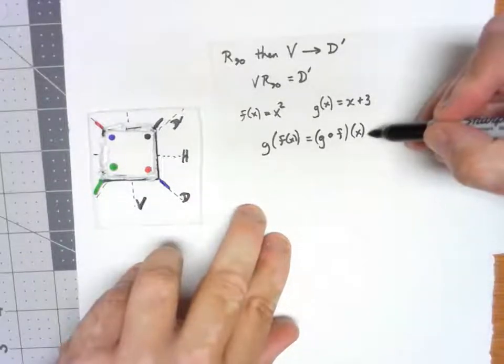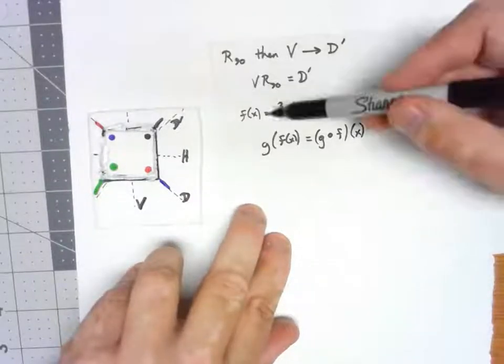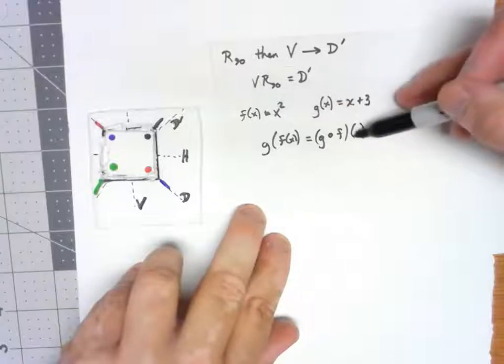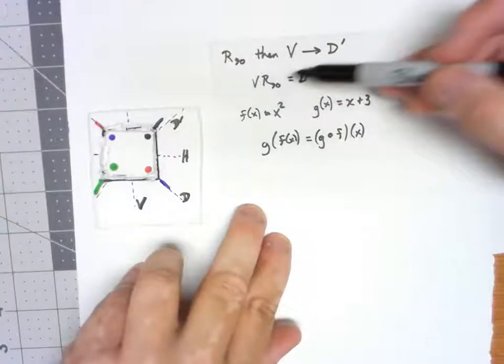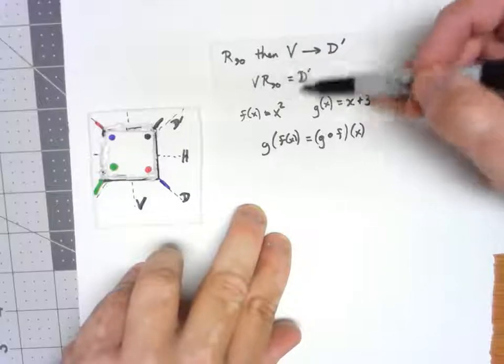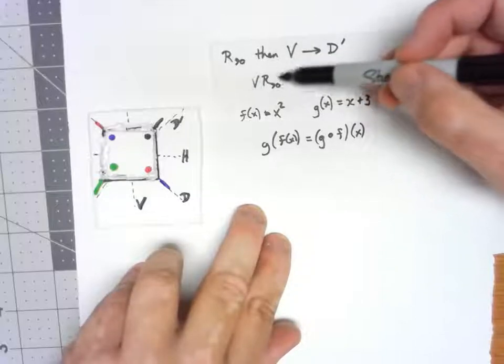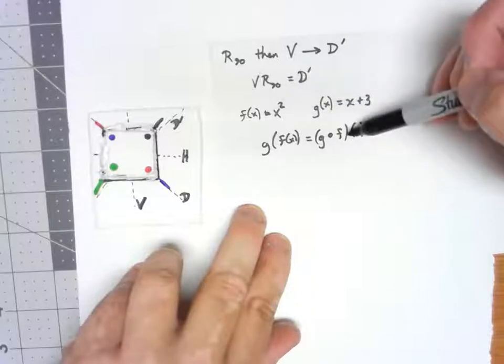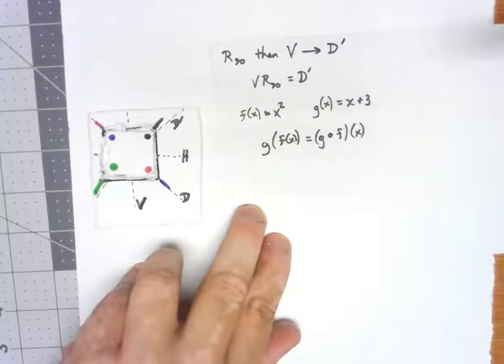Specifically thinking about this second way, notice that even though we're doing f first, it ends on the right. It's the same exact thing here. These are functions. Since we're doing the rotation by 90 first, that ends up on the right, just like it would with a function here.